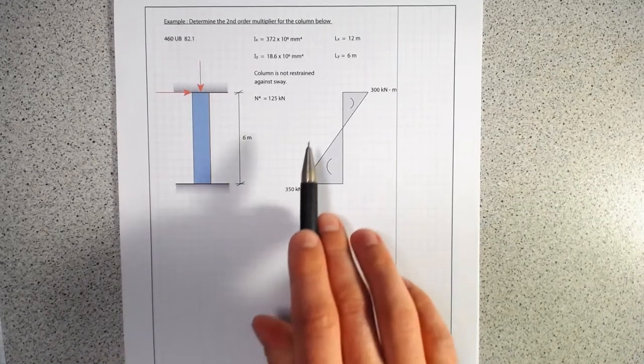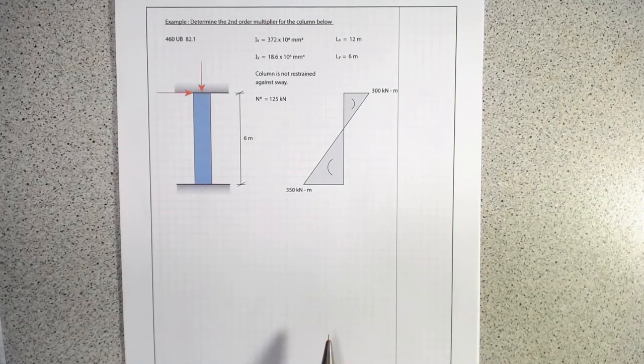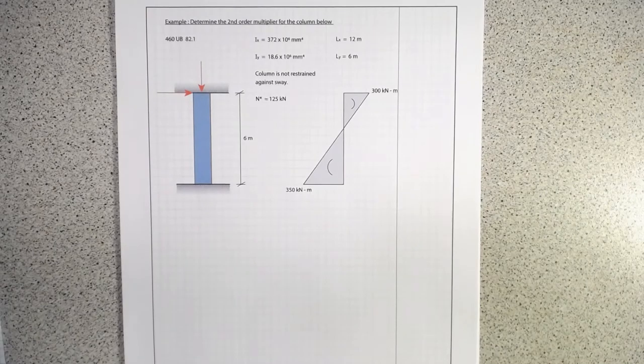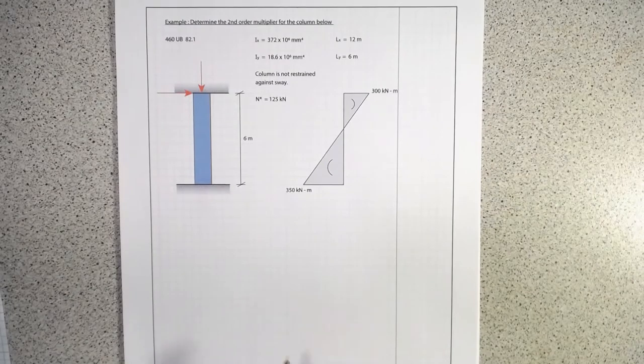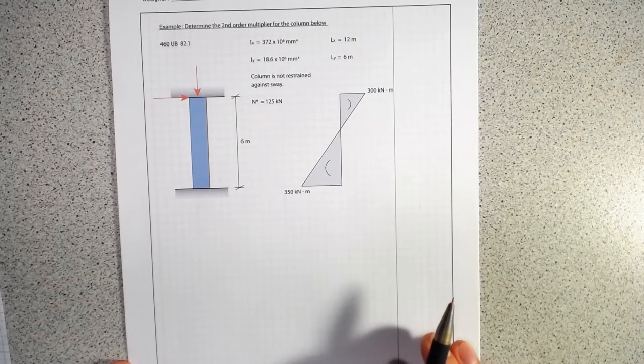We've got an LX of 12 meters and a LY of 6 meters. That's just going to be what our distance is there. So the first thing we need to do is go ahead and determine...